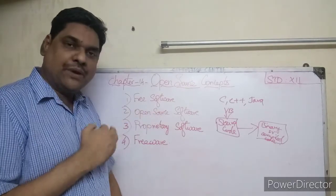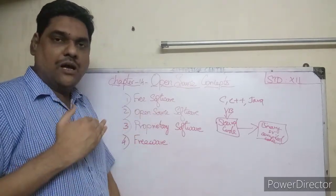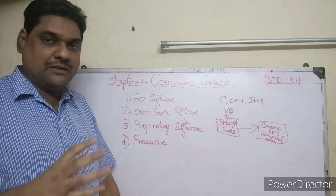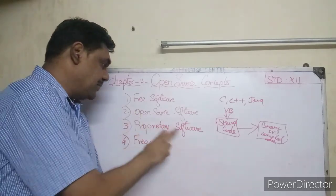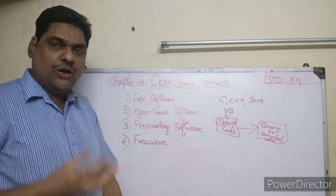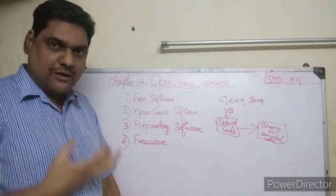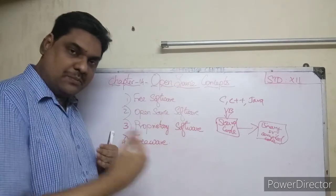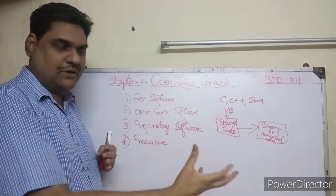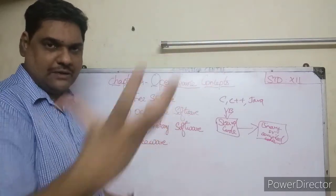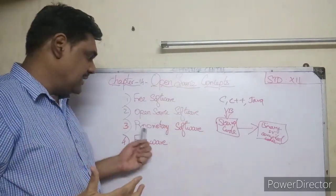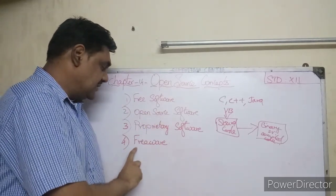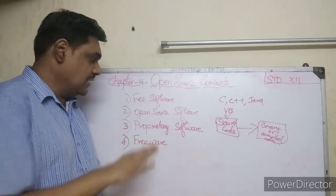For example, MS Office and MS Windows are proprietary software. These are licensed versions. In proprietary software, the source code is kept private — only the binary code is distributed. That kind of software is called proprietary software.